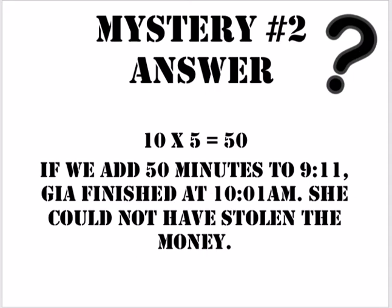Mystery clue number two answer: 10 times 5 equals 50. If we add 50 minutes to 9:11, Gia finished at 10:01 a.m. She could not have stolen the money.